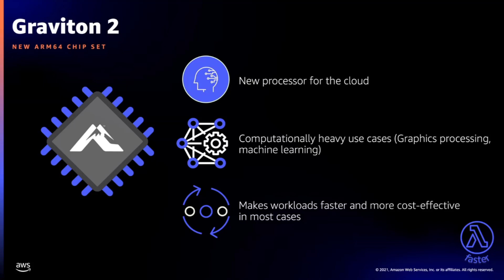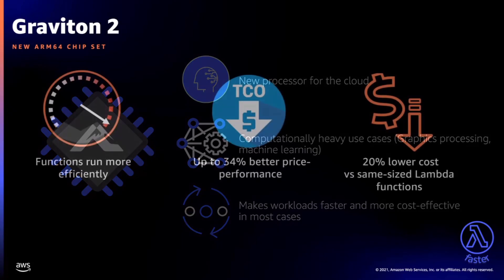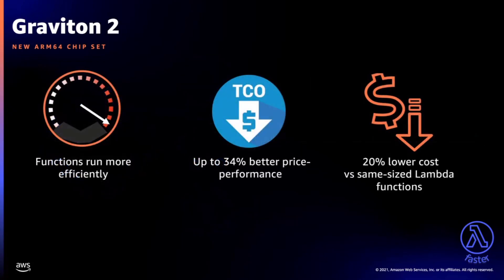There are certain types of Lambda functions — usually graphics processing or machine learning — that are very computationally heavy. In these cases, knowing what instruction set you're running is important because libraries are designed for specific workloads. In most cases, running your Lambda functions with Graviton will make workloads faster and more cost effective, though some workloads are optimized for x86. When you use Graviton, you save money in two ways: functions run more efficiently, and you pay less for the time they run. Lambda functions powered by Graviton 2 are designed to deliver up to 34% better price performance at 20% lower cost.